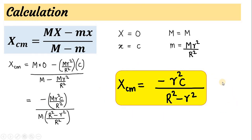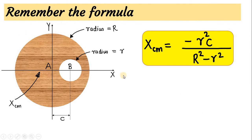This is a very good formula that we should remember. In the exam, the centre-to-centre distance c can vary, and the radius of the hole can be different — so it is recommended to remember this formula. For a disc with a hole, where c is the distance between the centres, small r is the radius of the hole, and capital R is the radius of the full disc, this formula gives the centre of mass of the disc with a hole.